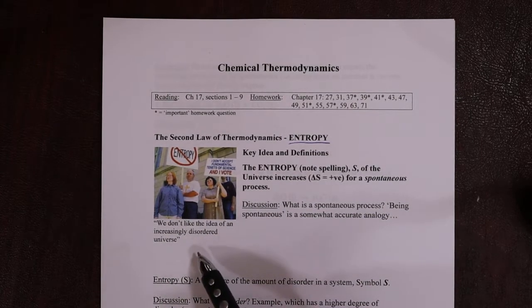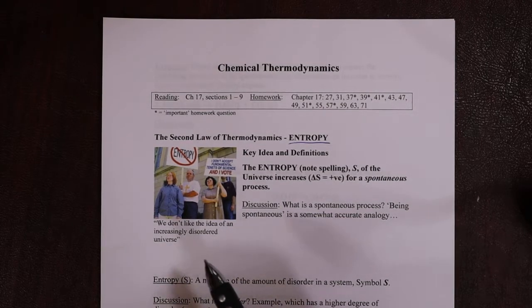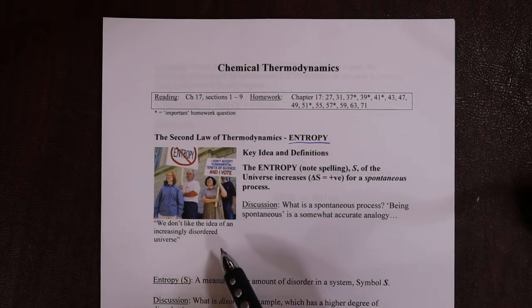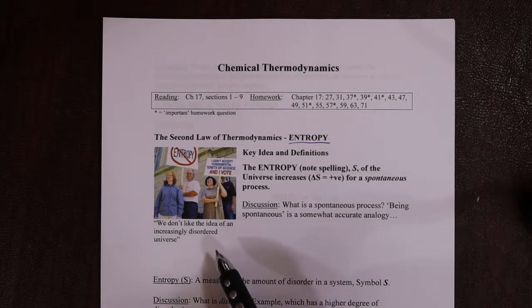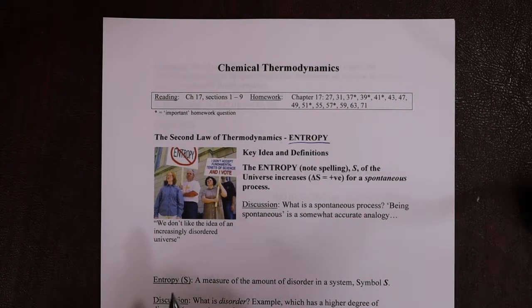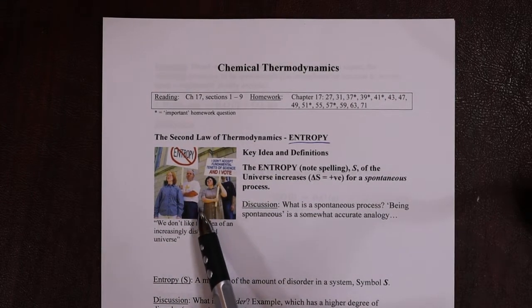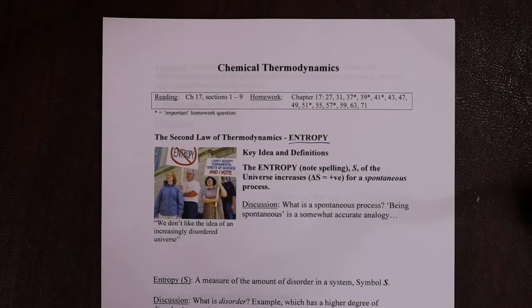But it turns out that science has shown that the universe over time is becoming more and more disordered. Eventually, given the final kind of state of the universe, it'll just be a very large cloud of randomized gas, if everything goes to the way of the second law of thermodynamics. So these folks, you know, here they are with their entropy sign. So, you know, welcome to the United States.